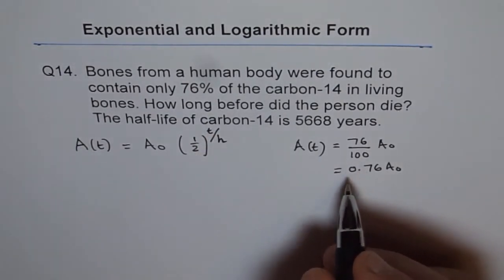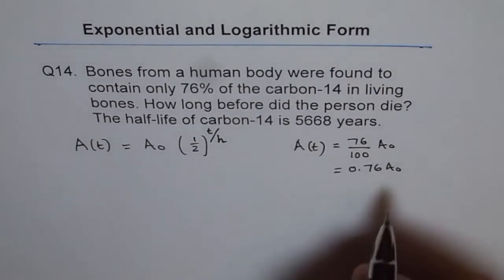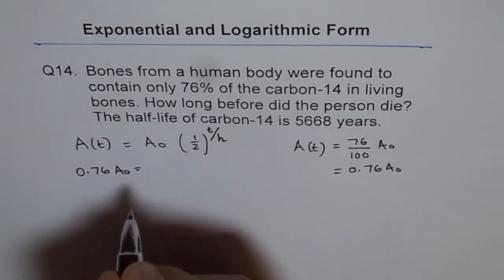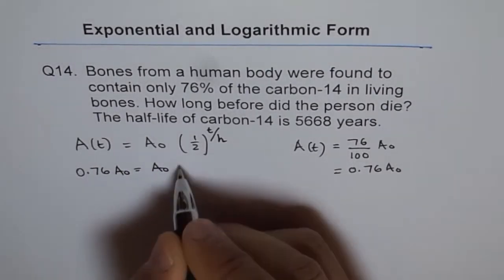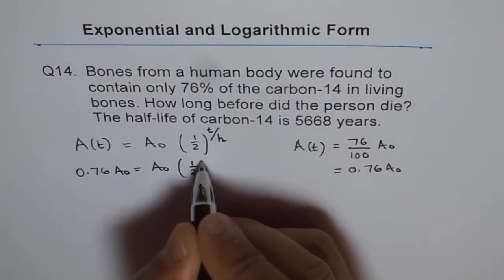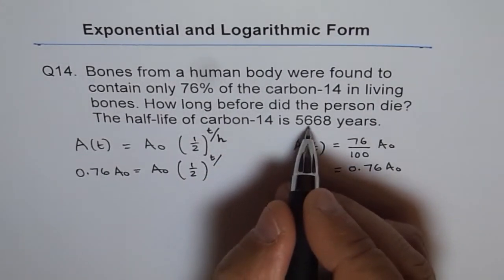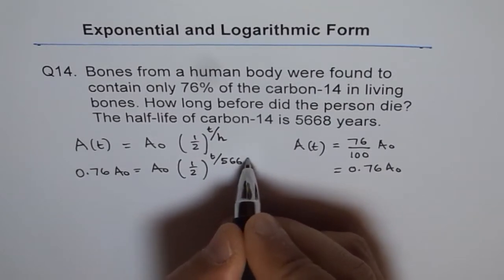Let us plug it in and find our answer. We can write A(t) as 0.76 A₀, which equals A₀ times half to the power of T over 5668.